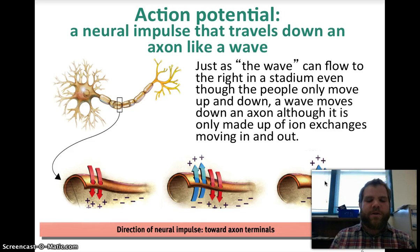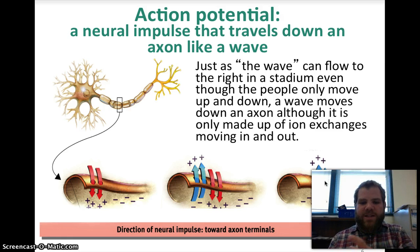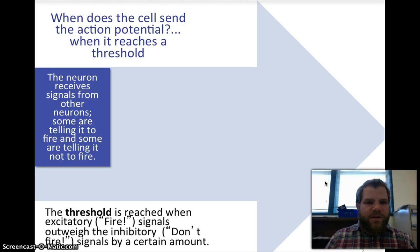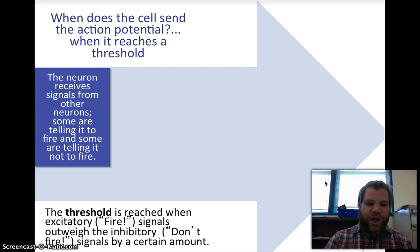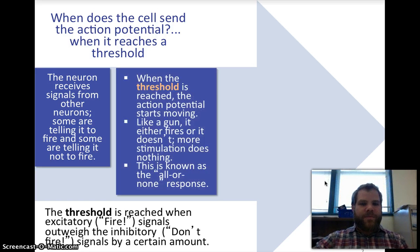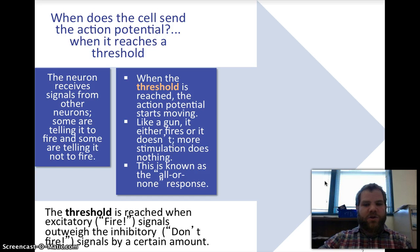The direction of the neural impulse is towards the axon terminals, away from the cell body, towards the dendrites of another neuron. When does the cell send the action potential? When it reaches a threshold. The neuron receives signals from other neurons — some telling it to fire, some telling it not to fire. The threshold is reached when more neurons are telling it to fire. Like a gun, it either fires or it doesn't — this is known as the all-or-none response.